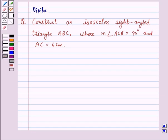Hello and welcome to the session. Let's start the session with a question. Construct an isosceles right-angled triangle ABC where measure of angle ACB is 90 degrees and AC is equal to 6 cm.